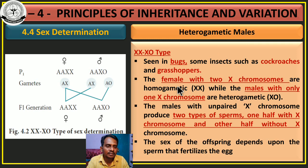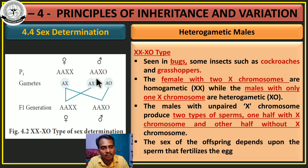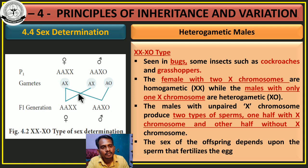The male with unpaired X chromosome produces two types of sperm: one half with the X chromosome and another half without the X chromosome. The sex of the offspring depends upon which sperm fertilizes the egg. If the egg with the X chromosome is fertilized by a sperm with the X chromosome, it will produce a female individual. If the egg with the X chromosome is fertilized by a sperm without the X chromosome, it will produce a male individual.